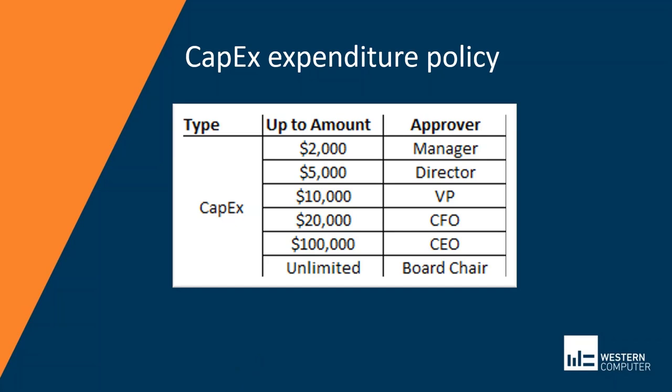Your organization likely has an expenditure policy, not unlike the one I'm showing on the screen at the moment. You have two options for setting this up in approval workflows: one would be to build approvals into individual workflow designs using user group assignments, or to use hierarchies such as the position hierarchy. The position hierarchy has the advantage of being reusable across approval workflows across modules, and it's maintained by using the reporting structure defined in human resources.